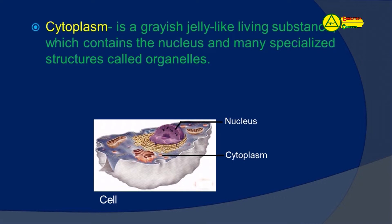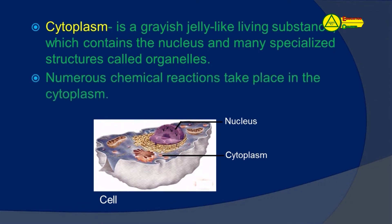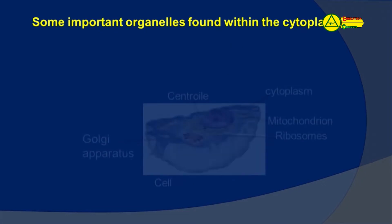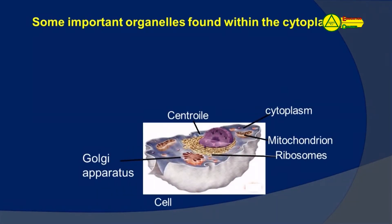Cytoplasm is a grayish, jelly-like living substance which contains the nucleus and many specialized structures called organelles. Numerous chemical reactions take place in the Cytoplasm.